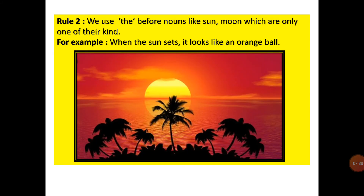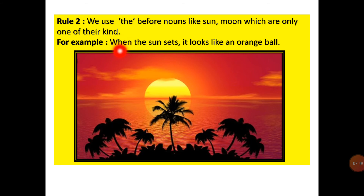Now the next rule: we use the before nouns like sun, moon, which are only one of their kind — specific things, specific nouns. Suppose the sun is only one, the moon is only one, that's why we use the before these nouns. 'When the sun sets, it looks like an orange ball.'